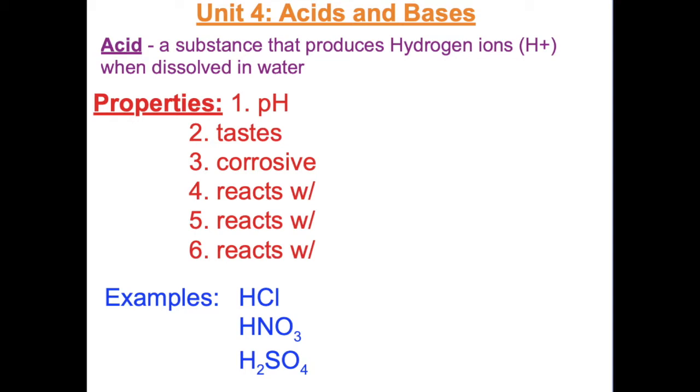An acid is a substance that produces hydrogen ions when dissolved in water. They tend to share certain properties. First, the pH is less than 7. That means on the pH scale, a substance with a pH between 0 and 7 is acidic.